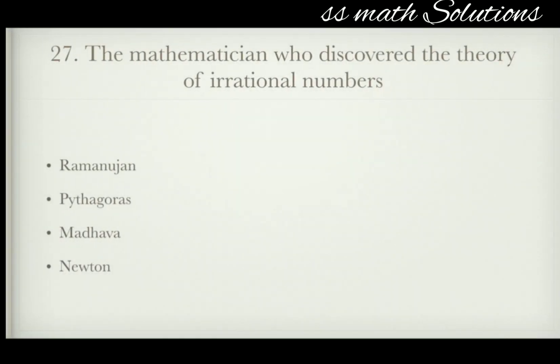The mathematician who discovered the theory of irrational numbers — Ramanujan, Pythagoras, Madhava, or Newton? The answer is Pythagoras. Pythagoras discovered the theory of irrational numbers.